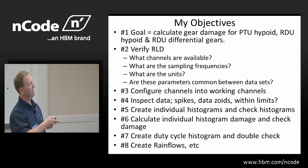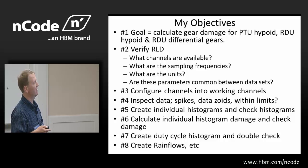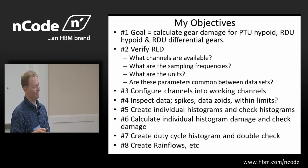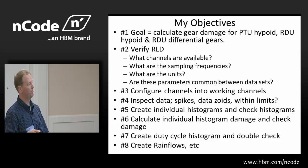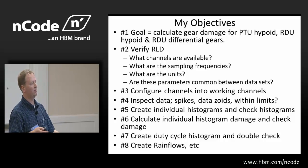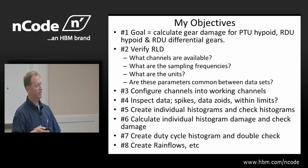The RDU has hypoid gears in it, and the differential gears send the torque out to the rear wheels. Number two: verify the road load data — what channels are available, what are the sampling frequencies, what are the units, are these parameters common between different data sets? Maybe we have 100 files, but three are from a different vehicle. Configure the channels into working channels like drive shaft torque or drive shaft speed. Next: inspect the data for spikes and data voids — is our data within proper limits? Create individual histograms, check them, calculate individual histogram damage, check the total damage, create a duty cycle histogram, and then you can go to creating rain flows.